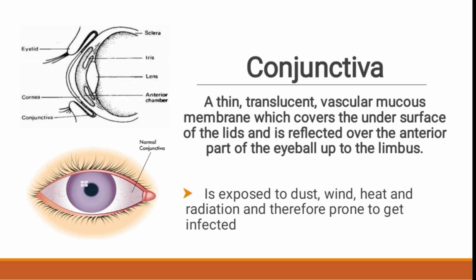When we open our eyes, the whitish part is most exposed to the environment — it can get dust, foreign particles, heat, and radiation. So the conjunctiva can easily get infected. When any dust particle or foreign particle enters your eye, your eyes get red. The structure involved in that redness is the conjunctiva — it gets red, blood vessels become dilated, and there are hypersensitive reactions in the conjunctiva.